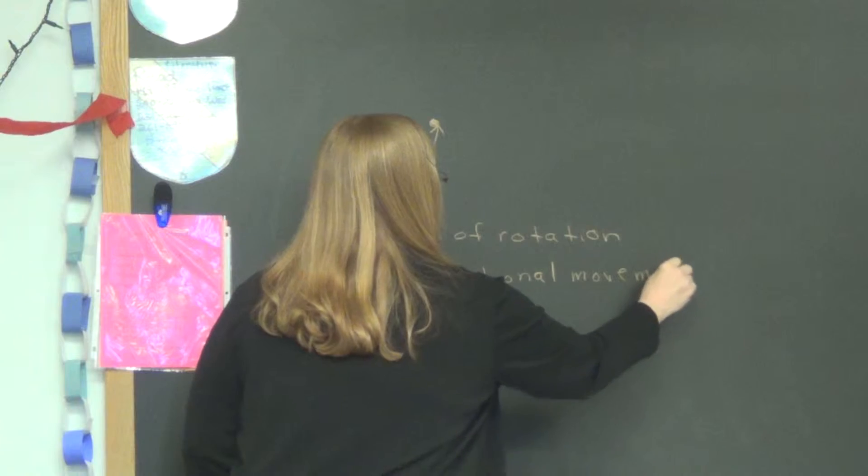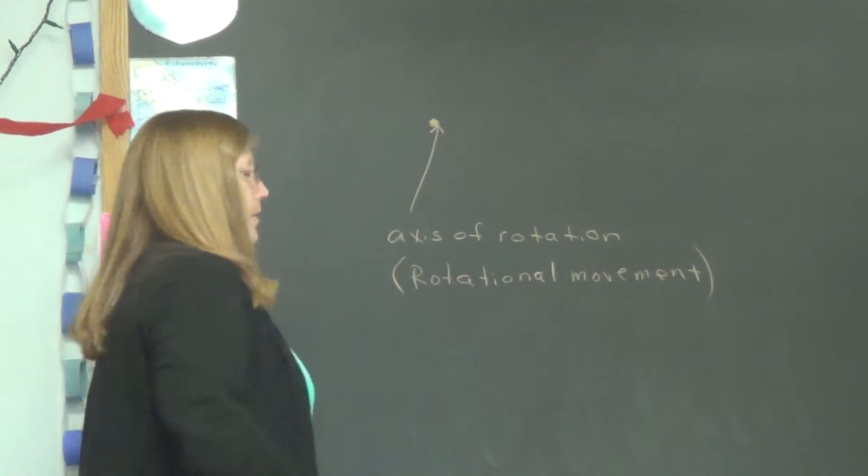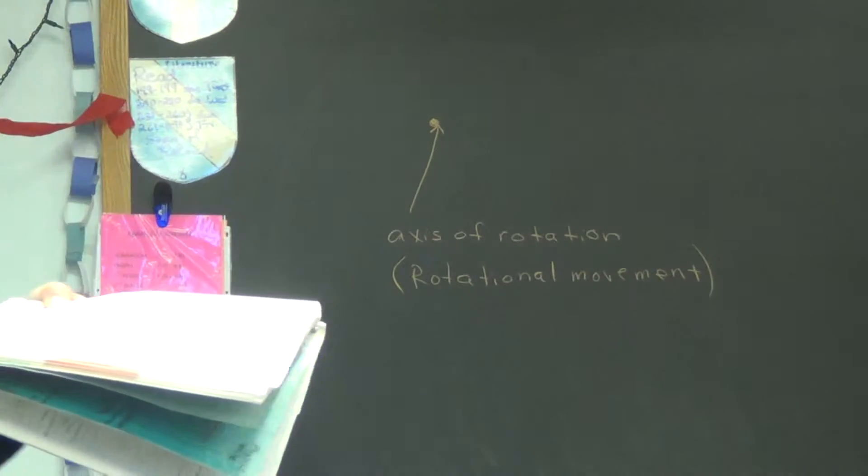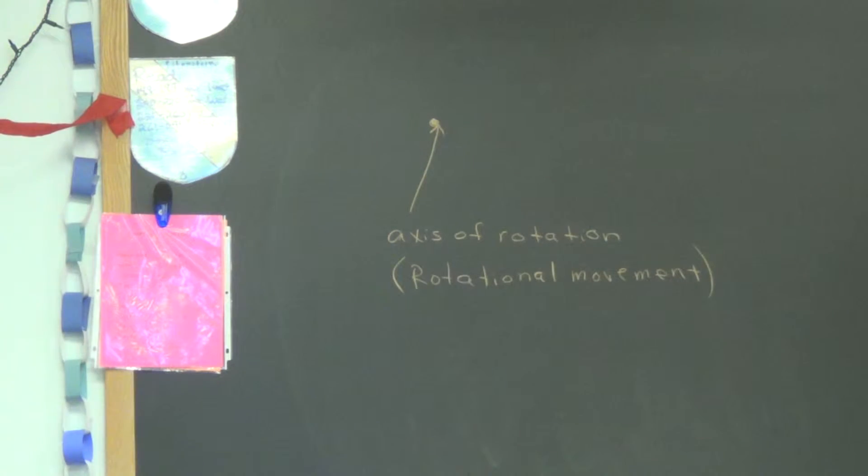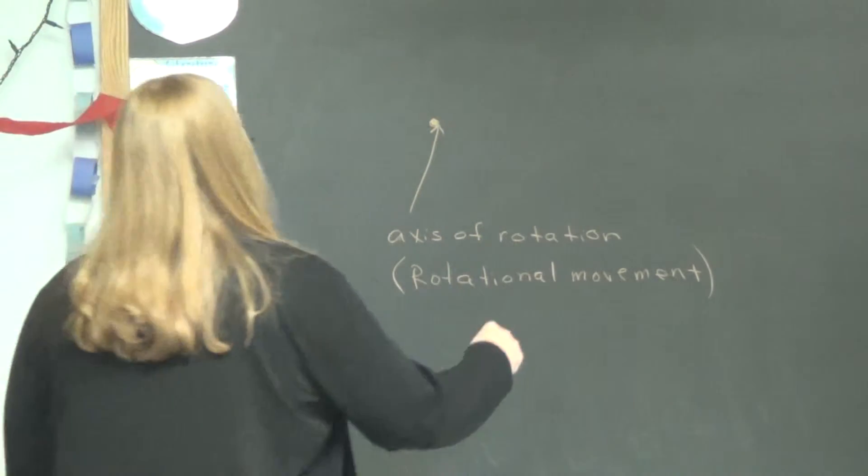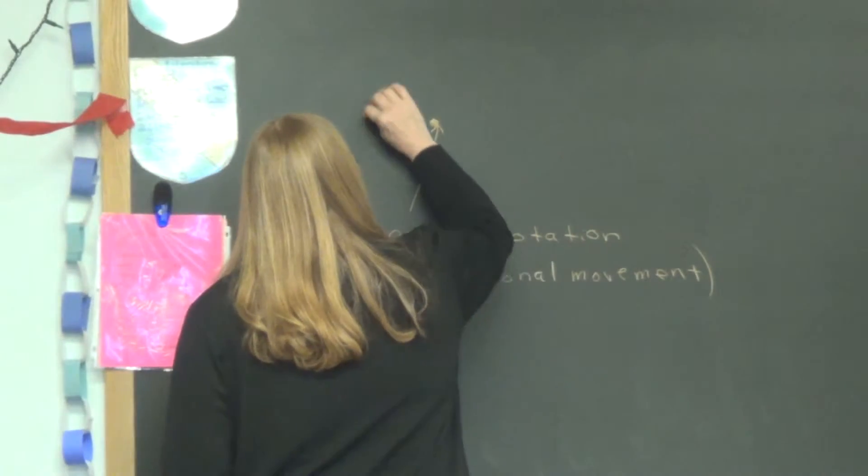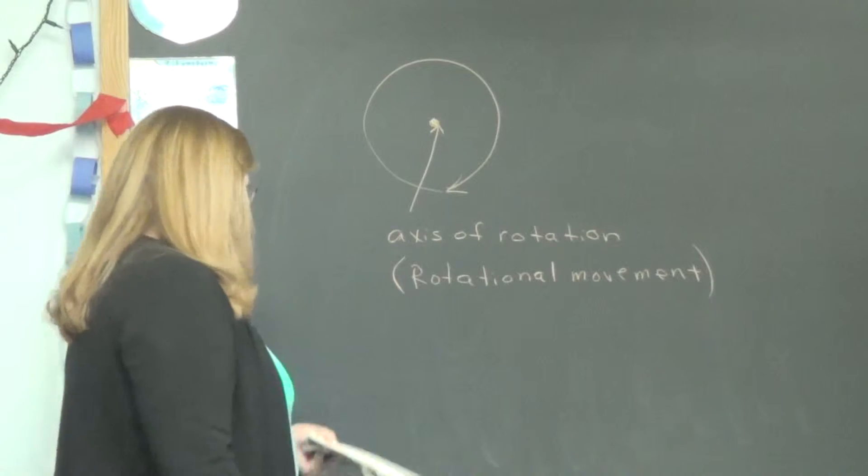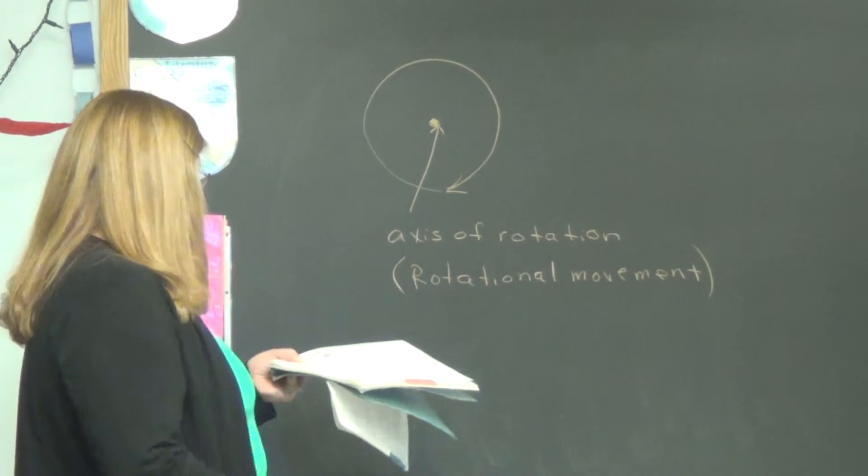So you can't have anything going in a circle unless there's a spot around which it is circling. So that is called the Axis of Rotation. So let's go ahead and circle around it now. And there we have the Axis of Rotation. And we have something that is circling it.